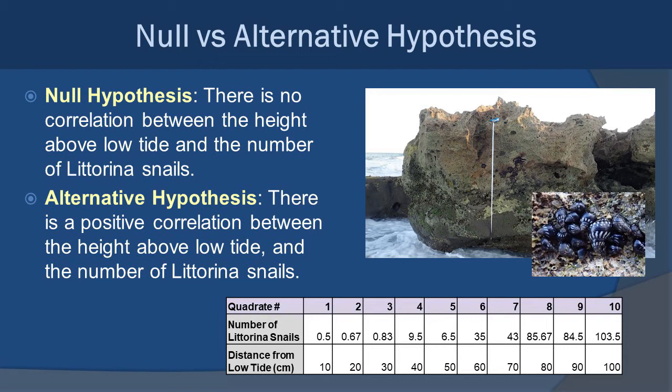Our alternative hypothesis would be the hypothesis we came up with for the most quadrat, which is there is a positive correlation between the height above the tide and the number of Littorina snails. The null hypothesis would state that there's no correlation between the height above the low tide and the number of Littorina snails. If you look at the data sets, you can tell that as the centimeters increase from 10 to 100 centimeters, look at the number of Littorina snails. This happens to be in our 10 by 10 centimeter quadrat, so it's a very small number, but you can see how that goes from basically less than 1 to over 100 per 10 centimeter square.